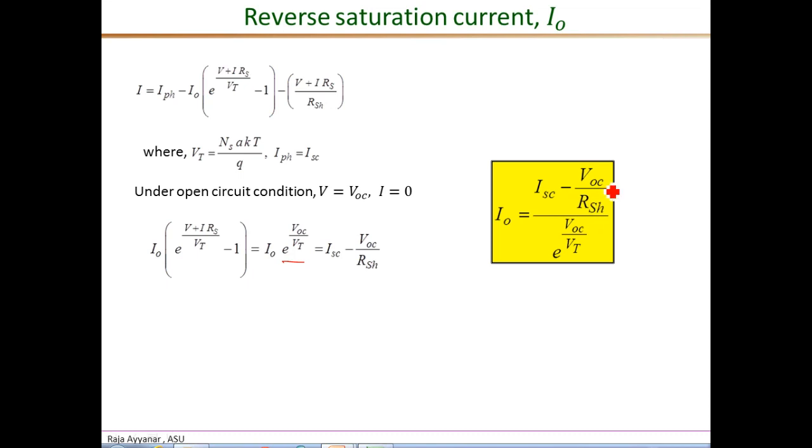I-O is I-SC minus the shunt current, V-OC over R shunt, divided by e to the V-OC over V-T. If you look at this expression, the I-SC and V-OC are obtained directly from the data sheet. The R shunt, we have already derived a closed form expression, so we can use that. V-OC is from the data sheet. So the only problematic term is this V-T, the thermal voltage, which is given by V-T equals Ns AKT over Q.